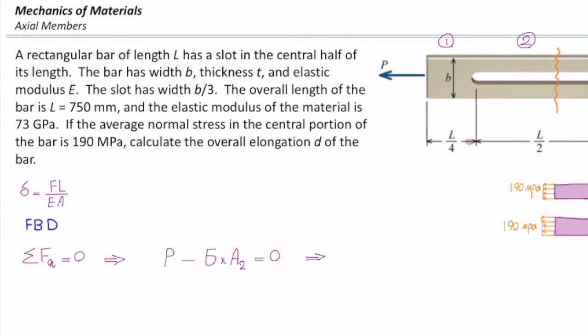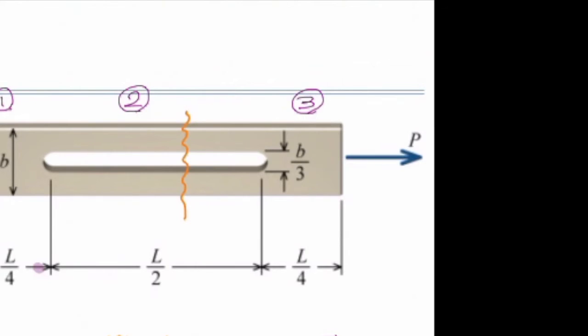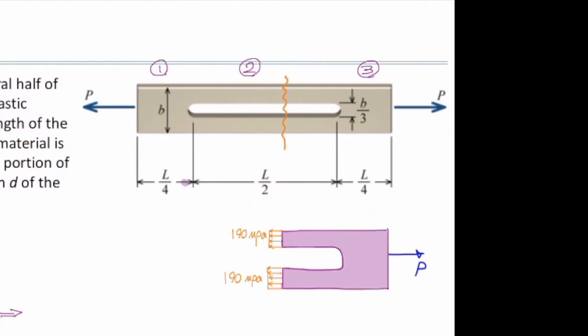From that, I can determine how much is P. How much is area of that part? It has a rectangular section, but it has a hole in between. The total height is B. The hole here has height of B over 3, so the total solid part would be 2/3 of B.